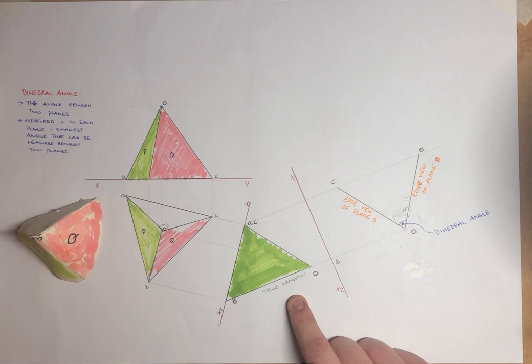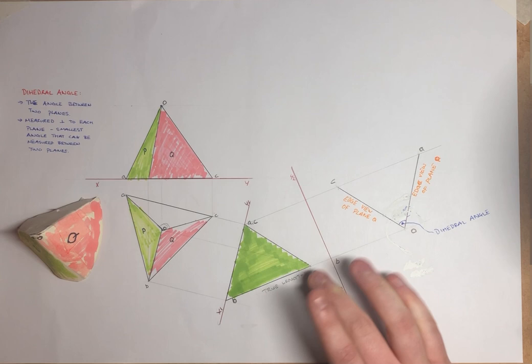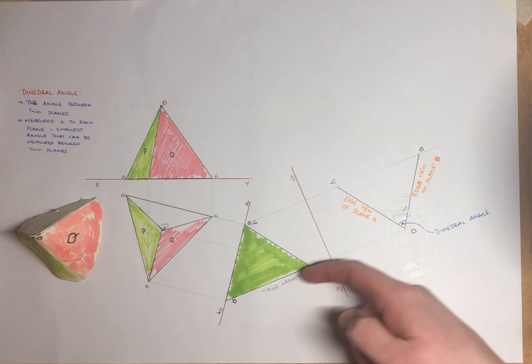What we want to get is the point view of this line OB. So rather than looking at a line, we want to look, just imagine looking straight, straight at this line OB. So you're looking in the direction so all you can see is a point.